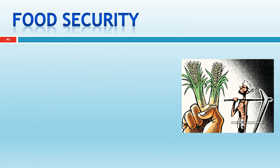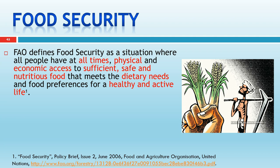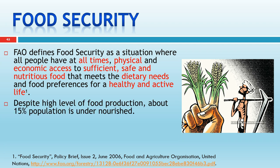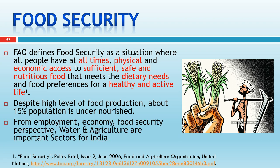Food security is a big challenge. The Food and Agriculture Organization defines food security as a situation where all people, at all times, have physical and economic access to sufficient, safe, and nutritious food that meets their dietary needs and food preferences for a healthy and active life. Despite high levels of food production, about 15% of the population is undernourished. Water and agriculture are important sectors for India's economy and food security.